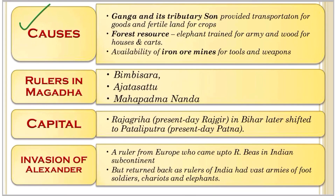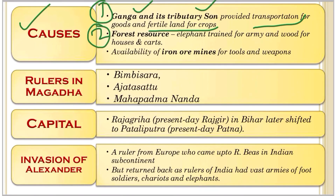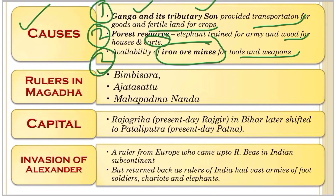The causes of Magadha's rise can be categorized into three main reasons. First, its location was very favorable - situated on the Ganga and its distributaries, providing transportation for goods and fertile land for crops. Second, it had huge forest resources, including trained elephants for the army and wood for building houses and carts. Third, there was availability of iron ore mines for building tools and weapons, which was critical as iron tools and plowshares had become very important.